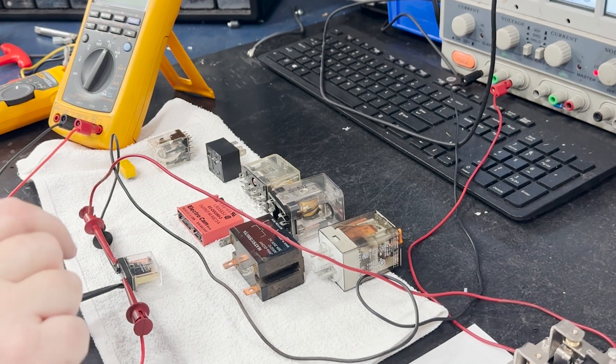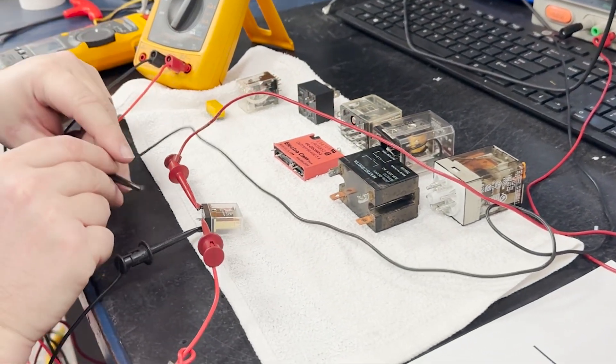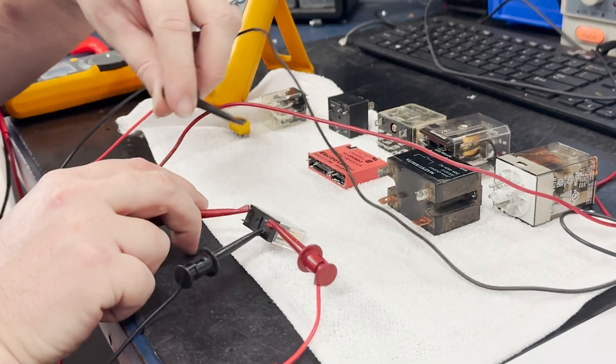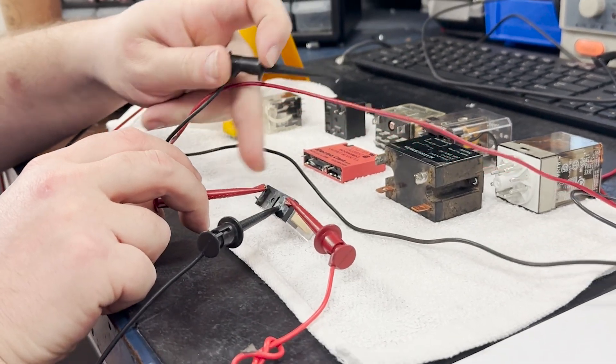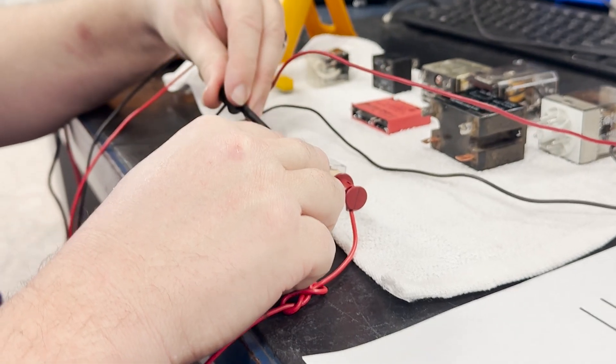Now I can actually switch the polarity of the coil, so I'm switching the positive lead to the negative position, and from here we can confirm that the relay is functioning. So this is a non-polarized relay.